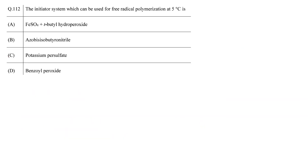In this question, among the given initiators, identify the initiator that can be used for free radical polymerization at 5 degrees Celsius. The question is asking you to identify the initiator that can be used at low temperature. Redox initiators are used to initiate polymerization at low temperature because they possess only weak bonds that have small bond dissociation energies, resulting in radical formation at a very wide range of temperatures.